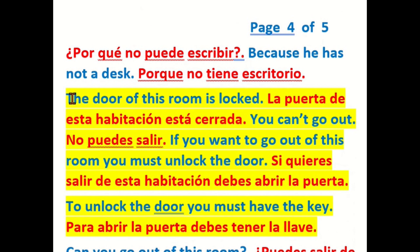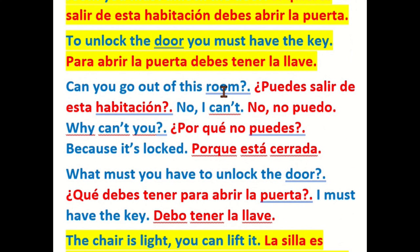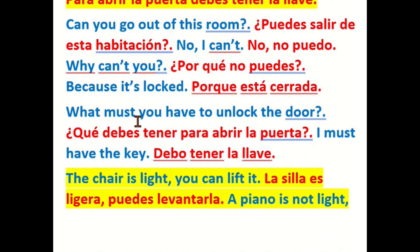The door of this room is locked — la puerta de esta habitación está cerrada. You can't go out — no puede salir. If you want to go out of this room you must unlock the door — si quieres salir de esta habitación debes abrir la puerta. To unlock the door you must have the key — para abrir la puerta debes tener la llave. Can you go out of this room? No, I can't — no, no puedo. Why can't you? Because it is locked — porque está cerrada. What must you have to unlock the door? I must have the key — debo tener la llave.